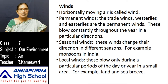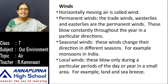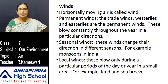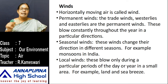Winds are divided into three types. The first type is permanent winds. Permanent winds — the trade winds, westerlies, and easterlies — are the permanent winds. These blow constantly throughout the year in a particular direction. These winds do not change their direction; they always blow in one particular direction, which is why they are called permanent winds.